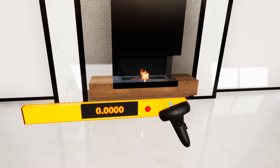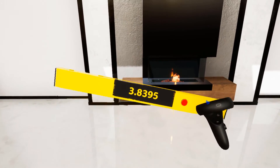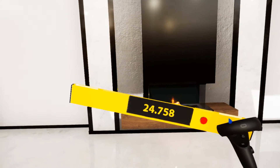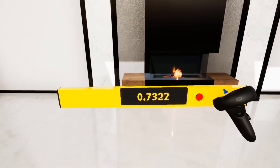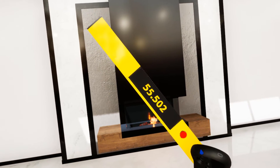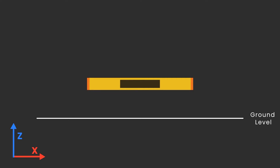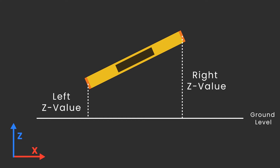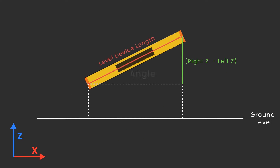In this tutorial we are going to learn how to use expressions in the training builder to perform mathematical and logical operations, and through those expressions we are going to create a level device to establish horizontal planes in the scene. The basic mechanism of the level we're making is to measure the height difference between its right and left side, which is to say the difference between their Z-coordinates, and since we already know the length of the level device, we can determine the angle through an inverse sine function.